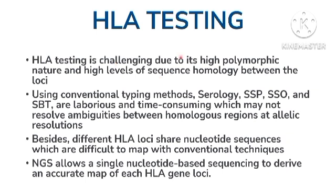HLA testing is challenging due to its highly polymorphic nature and high levels of sequence homology between loci. Using conventional typing methods such as serology, SSP, SSO and SPT are laborious and time consuming, which may not resolve ambiguities between homologous regions at allelic resolution. Different HLA loci share nucleotide sequences which are difficult to map with conventional techniques, and hence NGS is used for HLA typing, allowing single nucleotide base sequencing to derive an accurate map of each HLA gene loci.